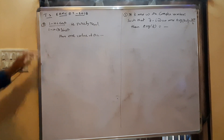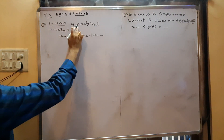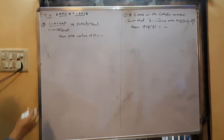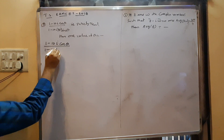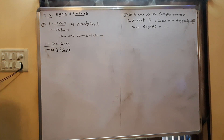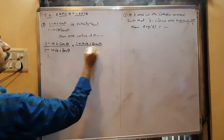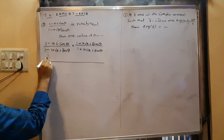Third question: for 1 − 10i·cosθ divided by 1 − 10i√3·sinθ to be purely real, first convert to a + ib form by rationalizing the denominator. Multiply numerator and denominator by the conjugate (1 + 10i√3·sinθ). After expanding, using i² = −1, we separate real and imaginary parts.